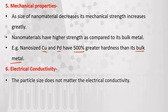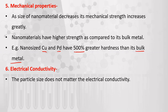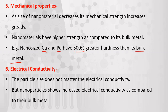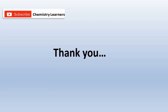The last property is electrical conductivity. Electrical conductivity is enhanced in nanomaterials. However, if a material is electrically non-conducting, you cannot provide electrical conductivity at the nanoscale. But if any material already has electrical conductivity, you can surely increase it by converting it into nanomaterials. So nanoparticles show increased electrical conductivity as compared to their bulk metal. With this we will stop here. Thank you all for watching — please subscribe to my channel Chemistry Learners and don't forget to press the bell icon button.